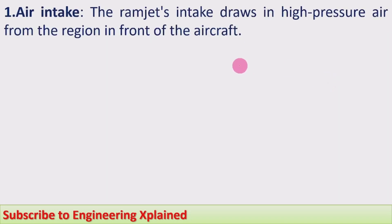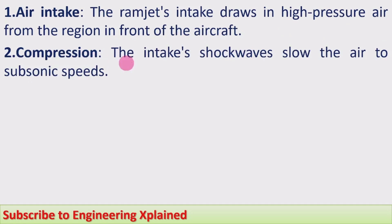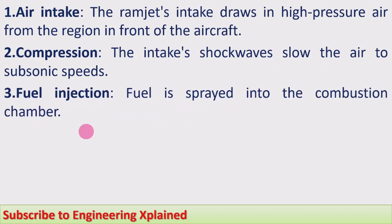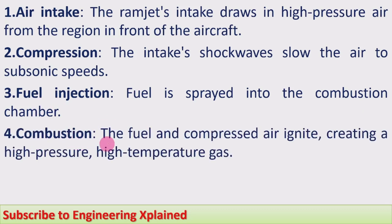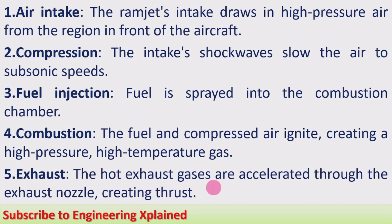Step-by-step working of the Ramjet engine: First, air intake — the ramjet's intake draws in high-pressure air from the region in front. Second, compression — the intake shock waves slow the air to subsonic speed, causing compression. Third, fuel injection — fuel is sprayed into the combustion chamber. Fourth, combustion — the fuel and compressed air ignite, creating high-pressure, high-temperature gas. Fifth, exhaust — the hot exhaust gases are accelerated through the exhaust nozzle, creating thrust to move the vehicle forward.